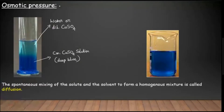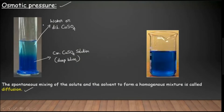Before we learn about osmotic pressure, let us understand some basic things. First we'll understand what is diffusion. In this slide I have presented a simple example: suppose you have a concentrated solution of copper sulfate, which is deep blue in color, placed in a beaker, and water is added slowly along the walls of the beaker without disturbing the copper sulfate solution. The two layers are more or less well defined.